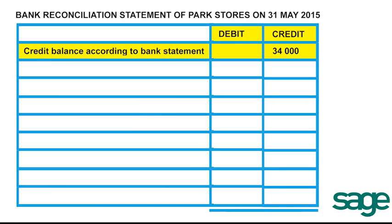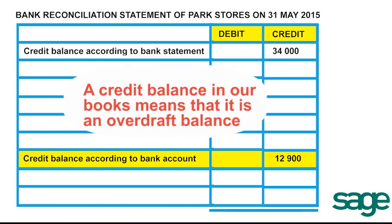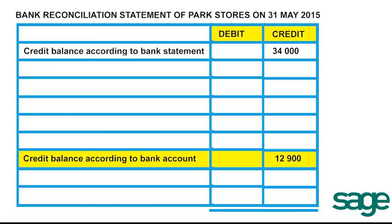We have a R34,000 credit balance according to the bank statement. After having recorded and taken into account several items appearing on the bank statement but not in our cash journals, our bank account now shows a credit balance of R12,900. A credit balance in our books means it is an overdraft balance, so we take that balance to the end of our bank reconciliation statement as a credit balance according to bank account of R12,900.